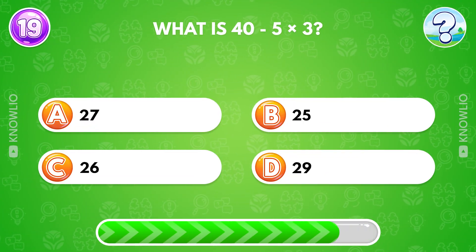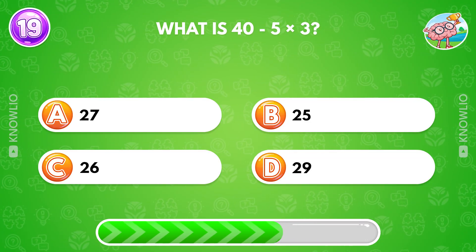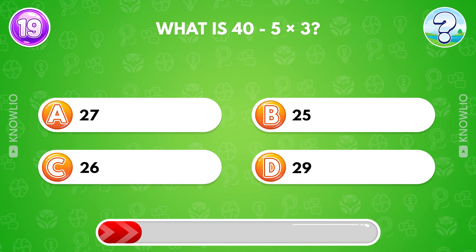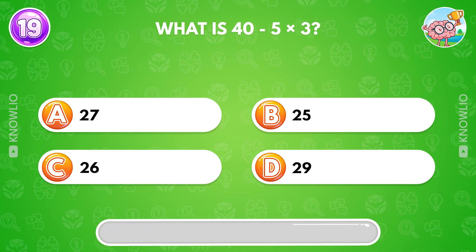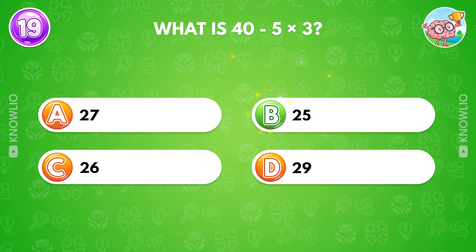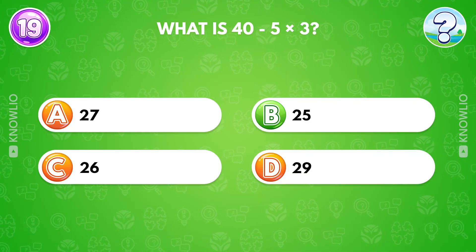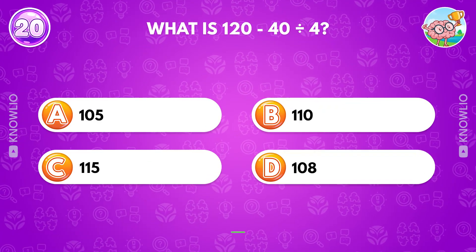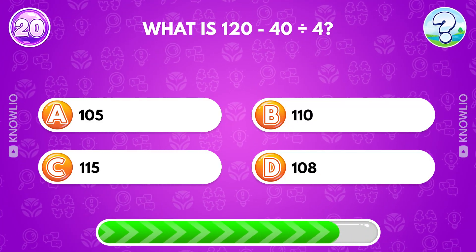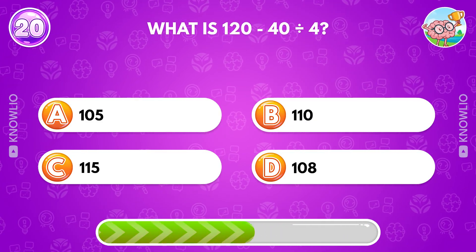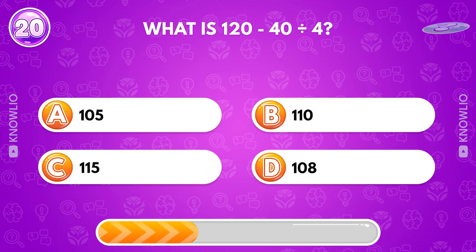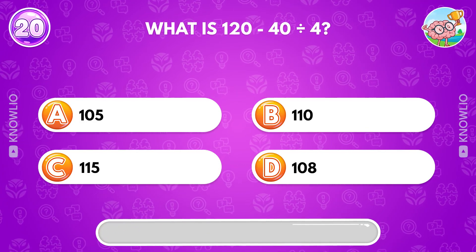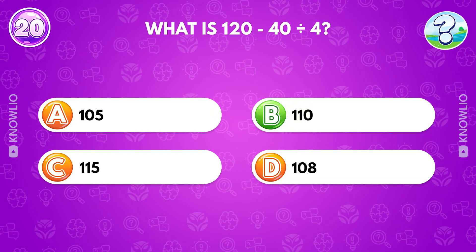What is 40 minus 5 times 3? Answer B, 25. What is 120 minus 40 divided by 4? Answer B, 110.